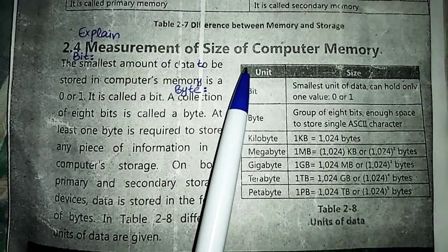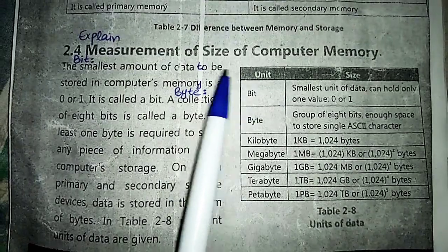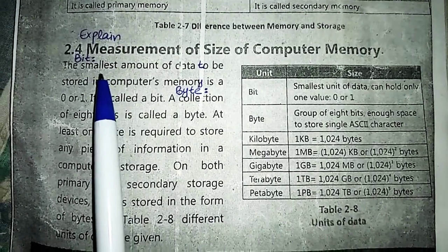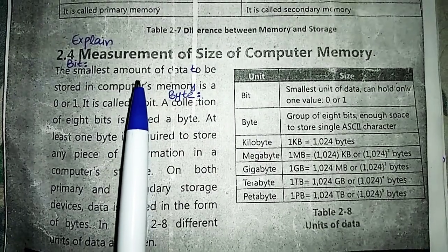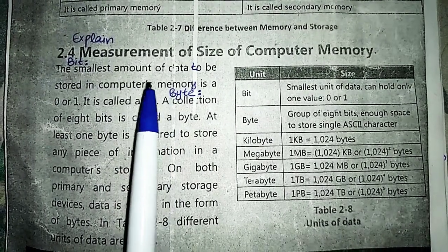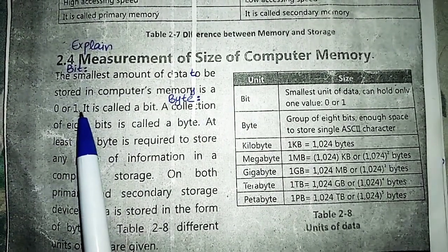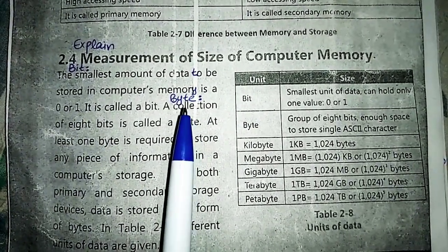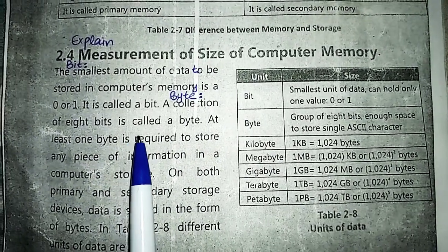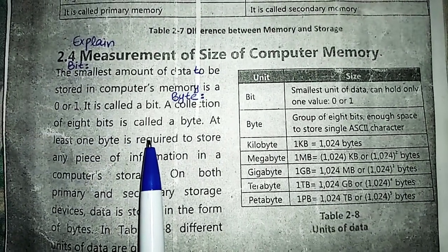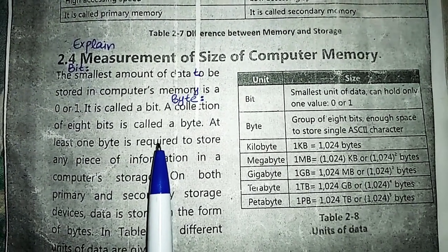The topic is measurement of size of computer memory. The smallest amount of data that can be stored in a computer's memory is a bit — a bit can store either zero or one. Next is byte. A byte is a collection of eight bits. As we discussed in the ASCII code table, in order to store one character or one letter, one byte is required.